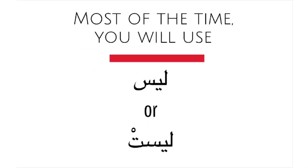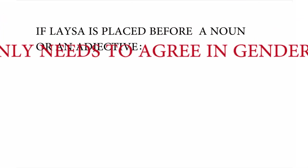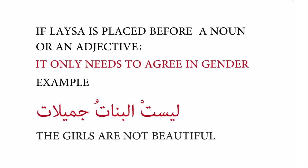In part one, after learning the conjugation of leysa, we learned that most of the time you'll only use leysa or leysat. Now you'll find out why. If leysa is placed before a noun or an adjective, it only needs to agree in gender. Arabic dialects will often use this pattern because it simplifies everything — you'll only have to remember two forms, leysa and leysat, instead of all the other forms of the verb.